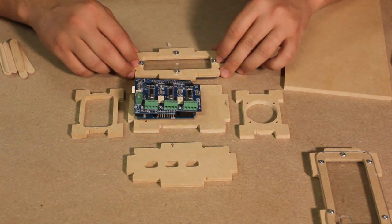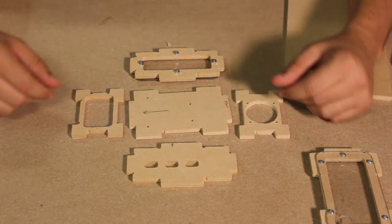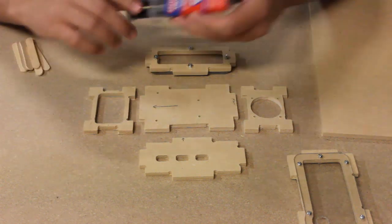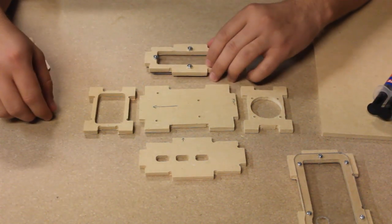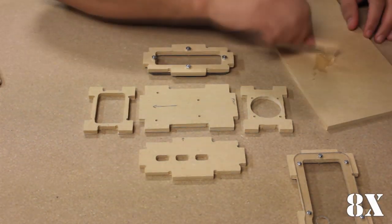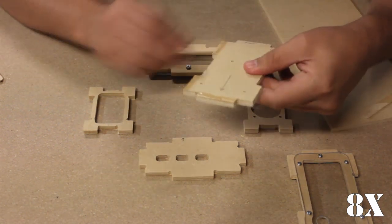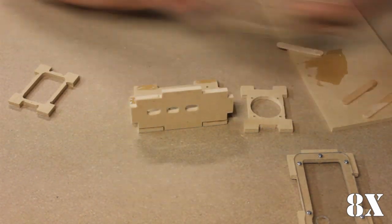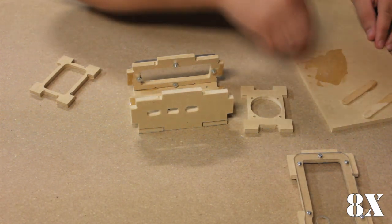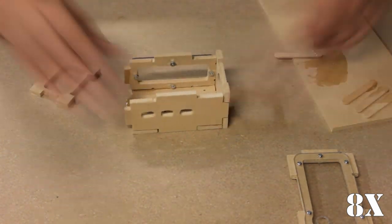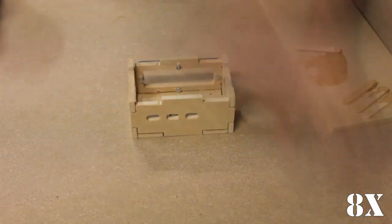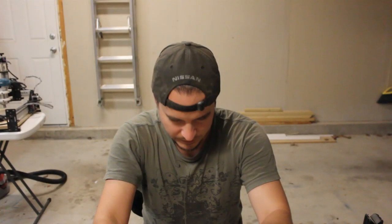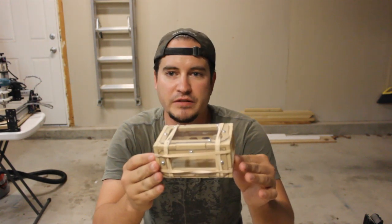So the first thing we're going to do is get a little battery light. Basically we're going to use some five minute epoxy and we're going to glue all this up. Now that we wait for the epoxy to cure, let's go ahead and start working on the electronics.